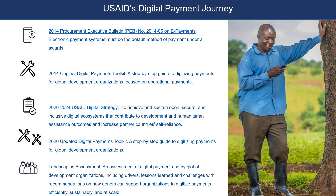It's been a real pleasure being here at USAID to work with you and with Shelley at Strategic Impact Advisors and NetHope on putting this toolkit together and updating it. Back in 2014, one of the first steps USAID took was to issue guidance in the form of a Procurement Executive Bulletin, or PEB, mandating electronic — now referred to as digital — payments as the default method of payment for all USAID awards. We didn't want to issue this mandate without providing a helpful resource on how to actually adopt and implement digital payments.